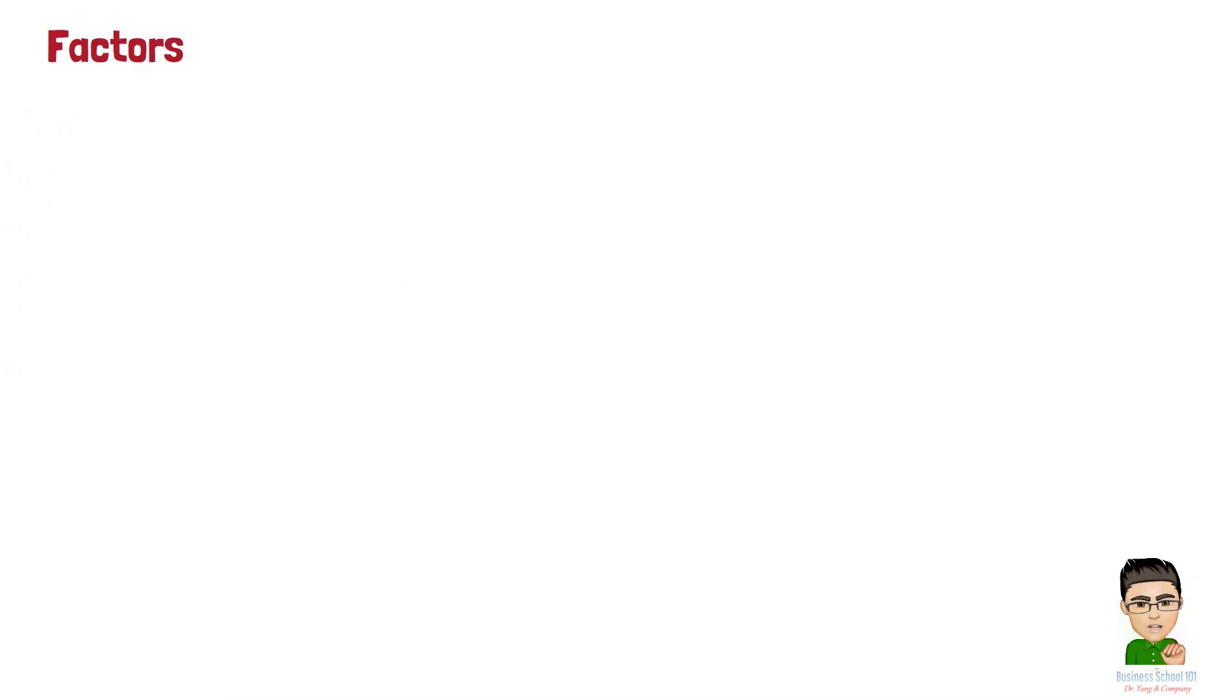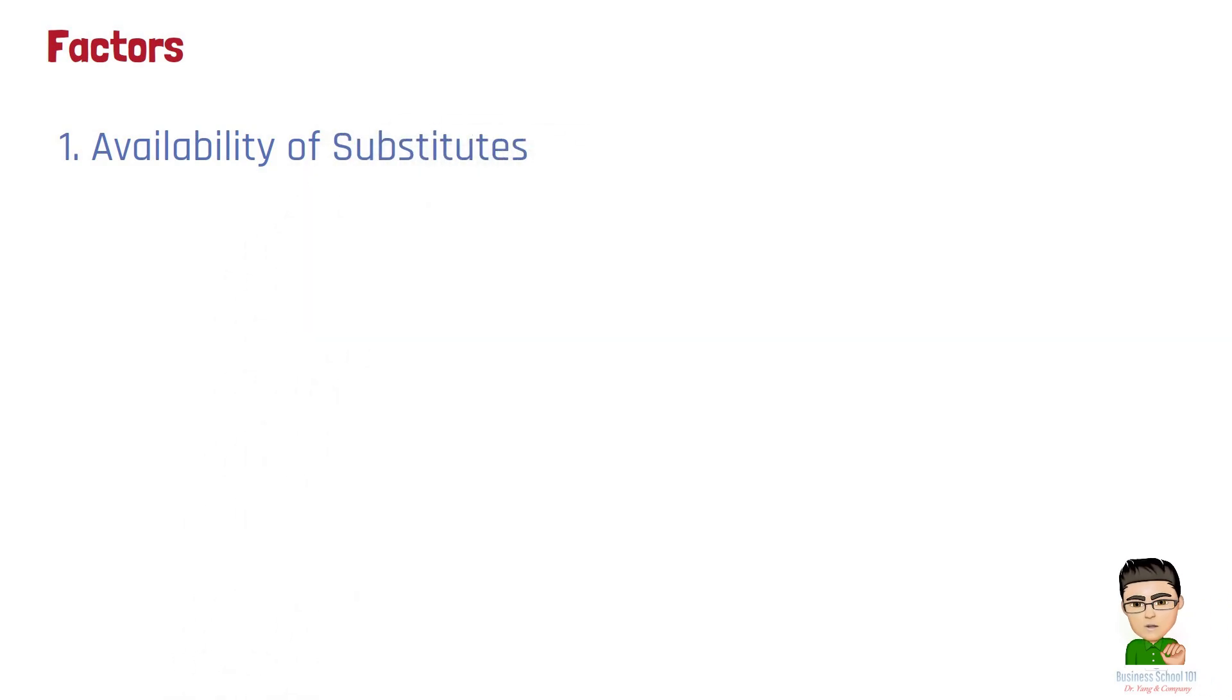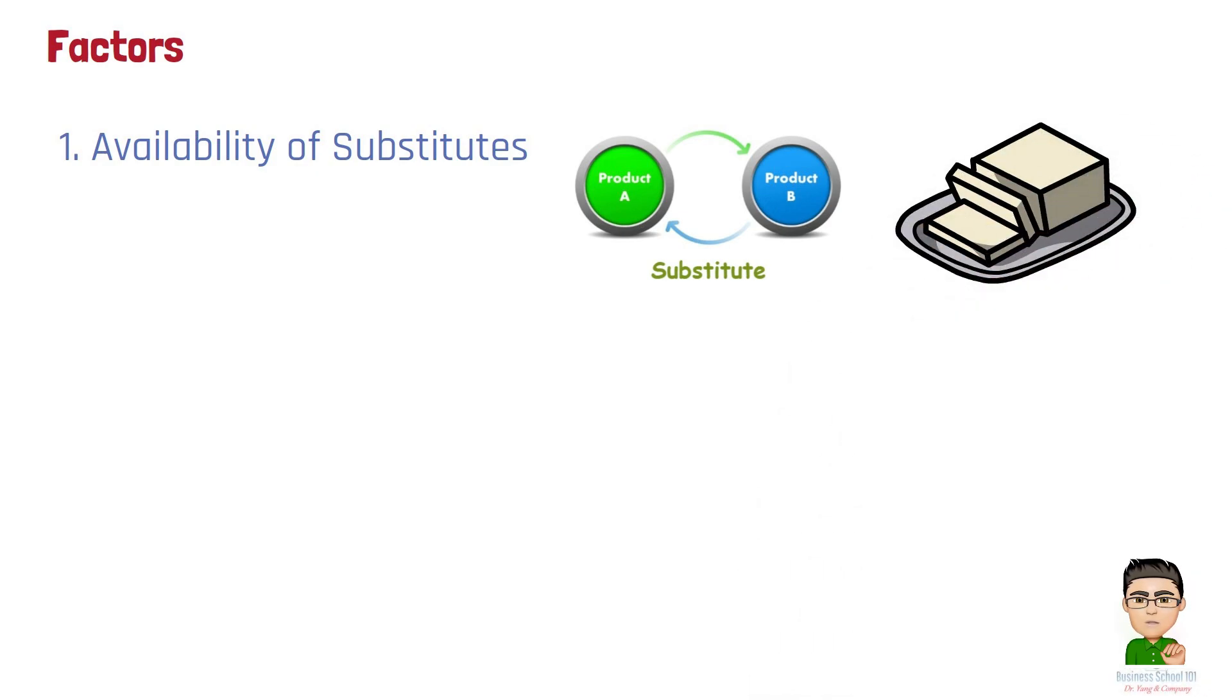Several factors determine whether the demand for a product is elastic or inelastic. Number 1: Availability of Substitutes. If there are close substitutes available, demand tends to be more elastic because consumers can easily switch to another product. For example, if the price of butter increases, many consumers might switch to margarine. This makes the demand for butter more elastic.